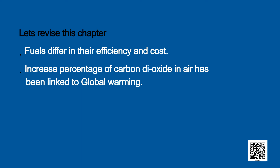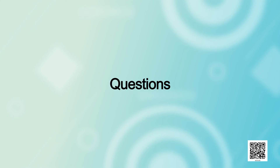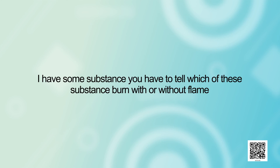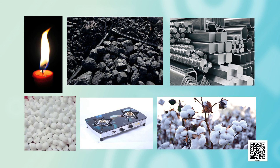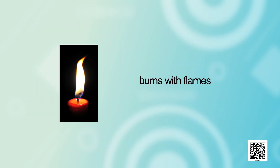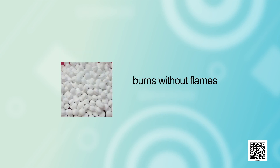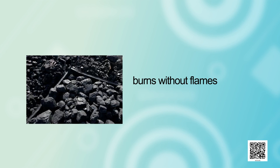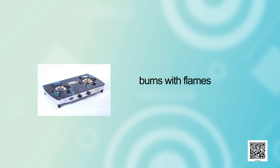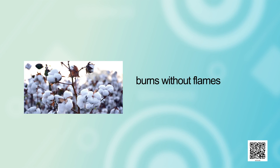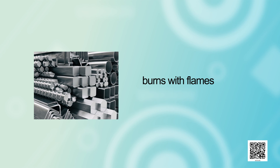Now let's discuss some questions. Which of these substances burn with or without a flame? The substances are: candle, naphthalene balls, a metal piece, coal, gas stove, and cotton. Candle burns with a flame. Naphthalene balls burn without a flame. Coal burns without a flame. Gas stove burns with a flame. Cotton burns without a flame. Metals burn with a flame.